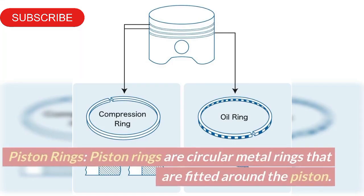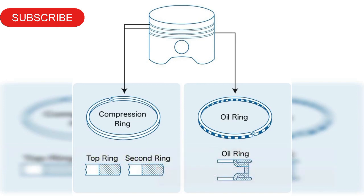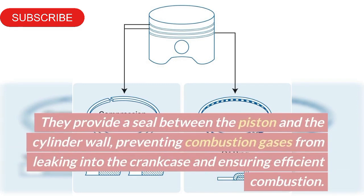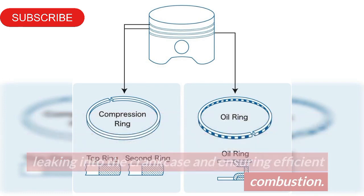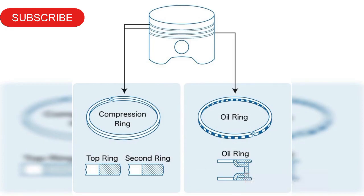Piston rings. Piston rings are circular metal rings that are fitted around the piston. They provide a seal between the piston and the cylinder wall, preventing combustion gases from leaking into the crankcase and ensuring efficient combustion.